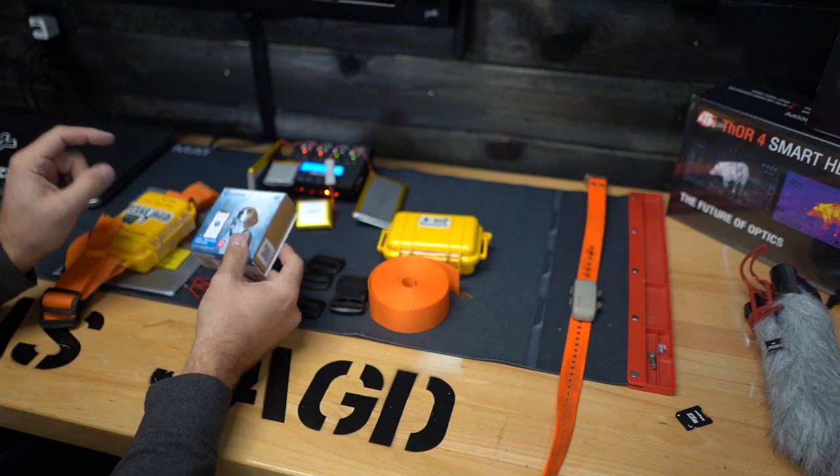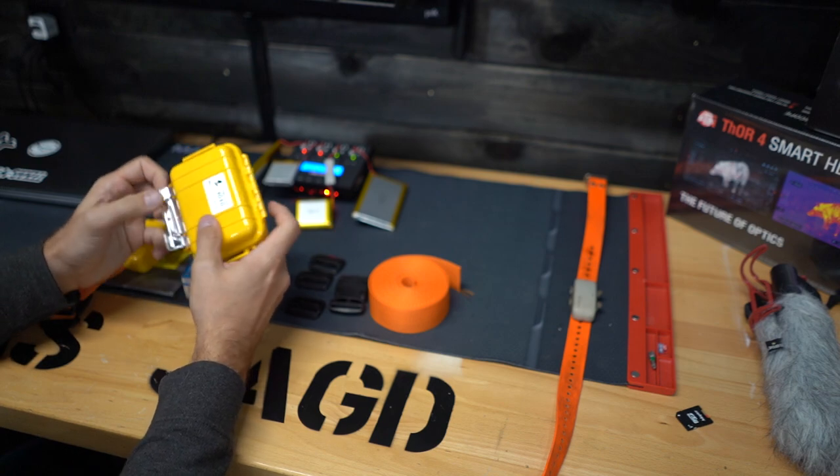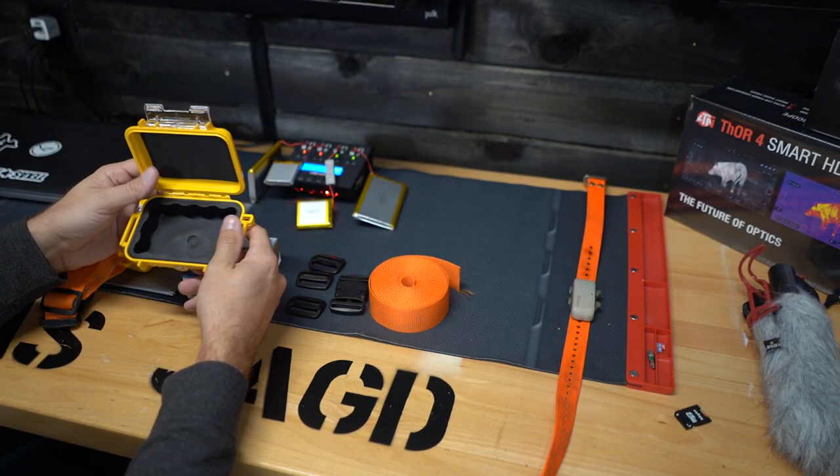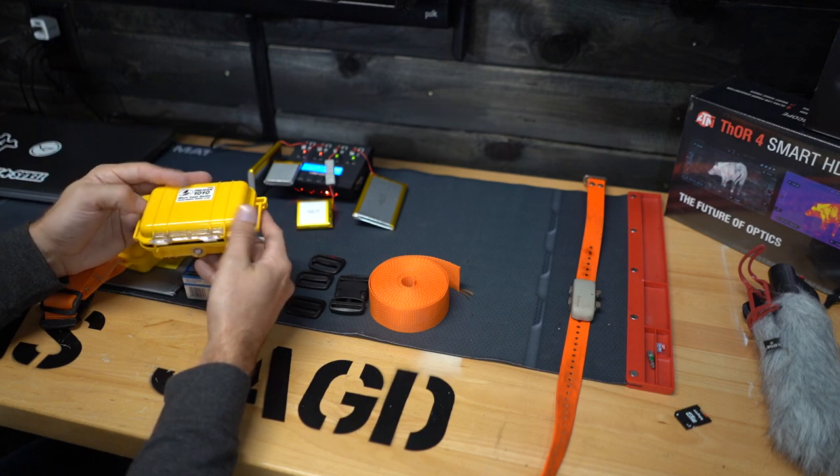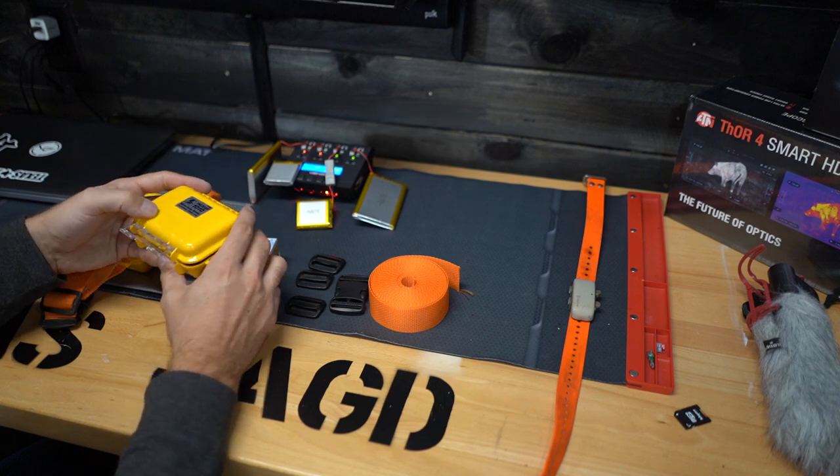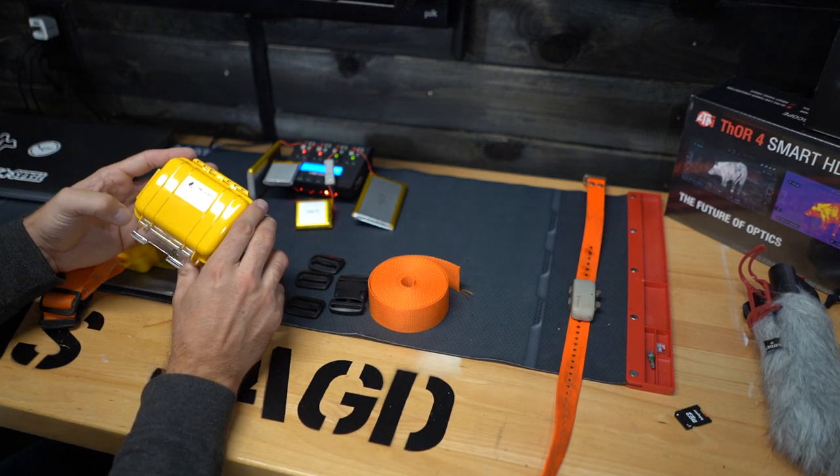Beyond the tracker, what else do you need? You need a case. There's the Pelican 1010 case. I opted for yellow because it's very visible. It's a waterproof case, ideal for all use cases. This tracker goes inside and keeps the tracker, once we modify it, outside of the elements.